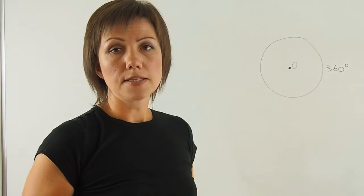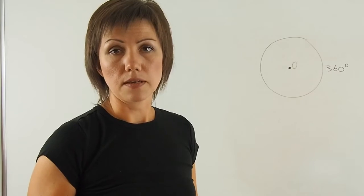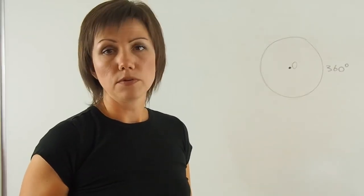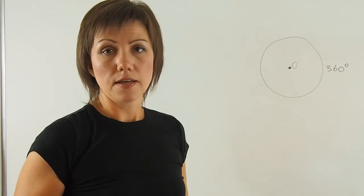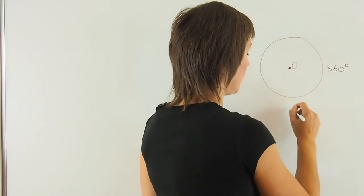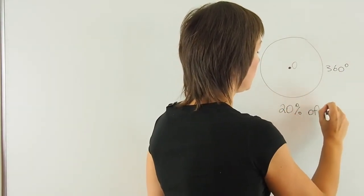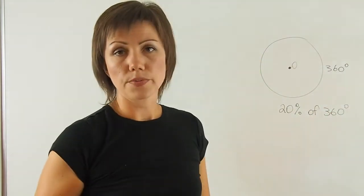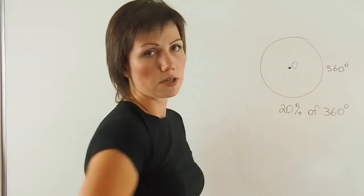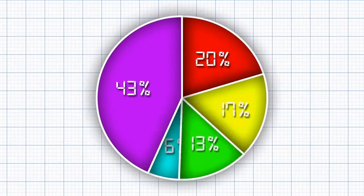Then if I say that 20% of this circle is something, is a quantity - say I'm talking about people who watch TV, 20% of the people watch TV - then I need to find 20% of 360 and use a protractor to find that portion of circle in terms of an angle that will correspond to this particular quantity.